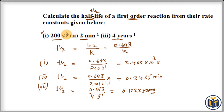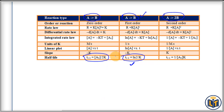This is how you calculate half-life from a given value of rate constant for a first-order reaction. You need to know the order of reaction, then apply the correct formula, because the relation between half-life and rate constant differs for different orders of reaction. You can use this table for reference.